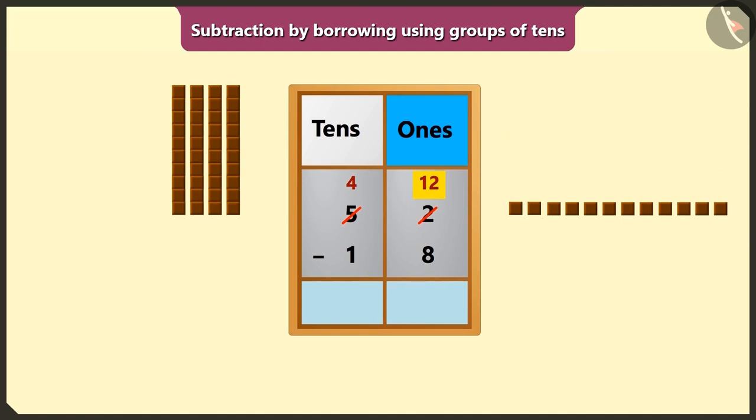Now if we subtract 8 ones from 12 ones, we will have 1, 2, 3 and 4 left. Yes. So we will write 4 in the place of ones.